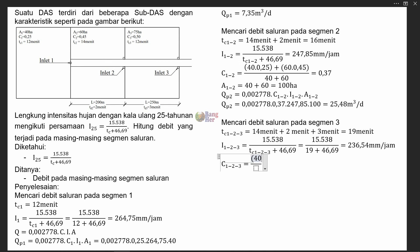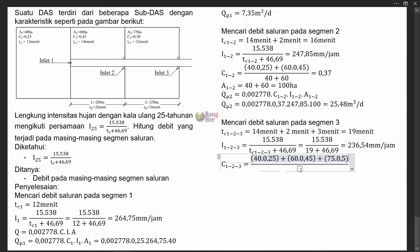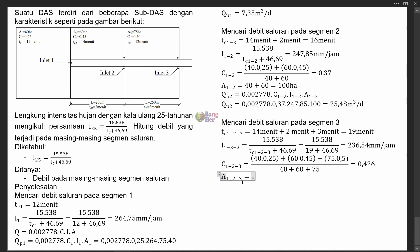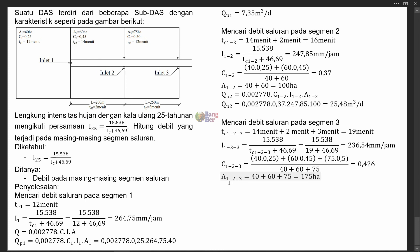Untuk mencari C segmen 3, caranya: (A1×C1 + A2×C2 + A3×C3) dibagi total luas, yaitu 40 + 60 + 75. Kalau dihitung, kita memperoleh C sebesar 0,426 tanpa satuan. Luas area total segmen 1, 2, dan 3 adalah 40 + 60 + 75 = 175 hektare.